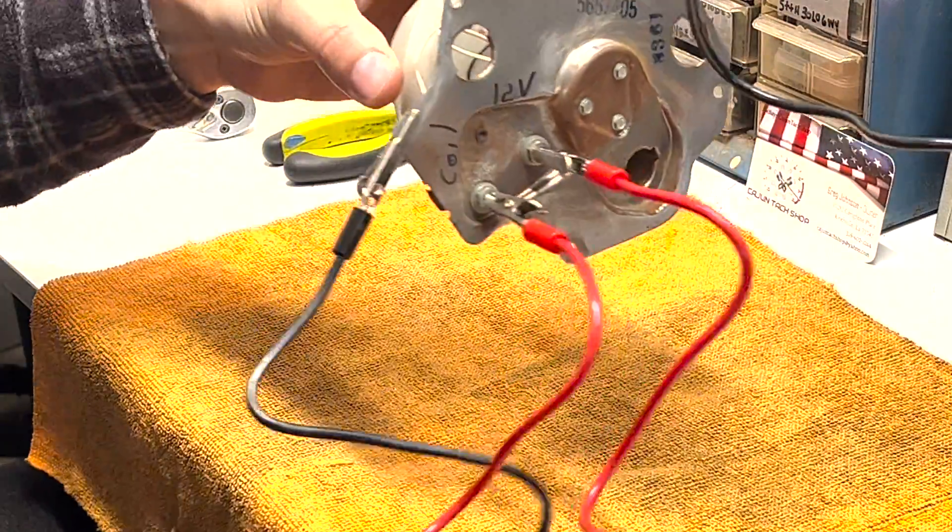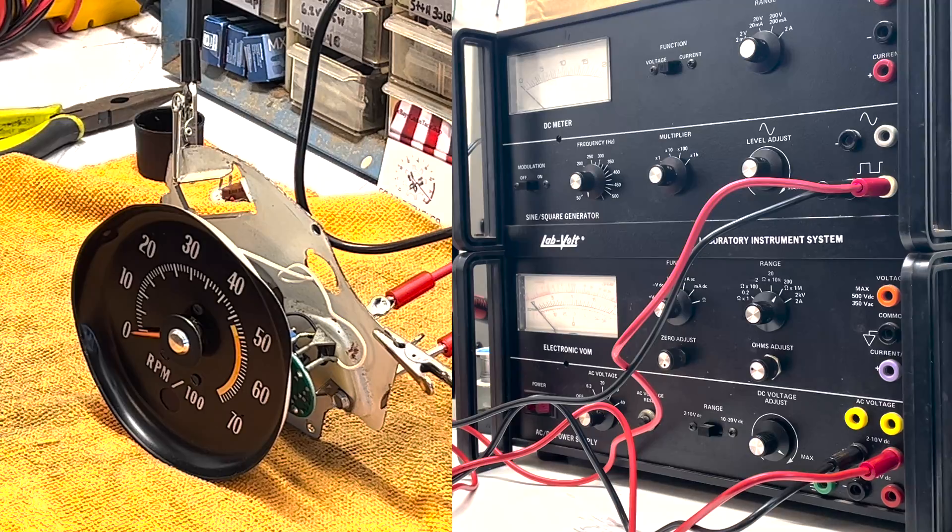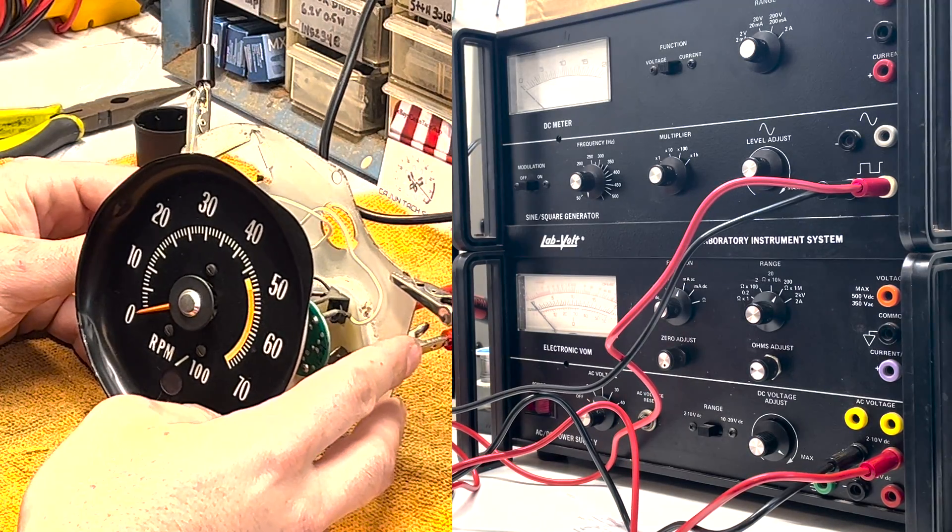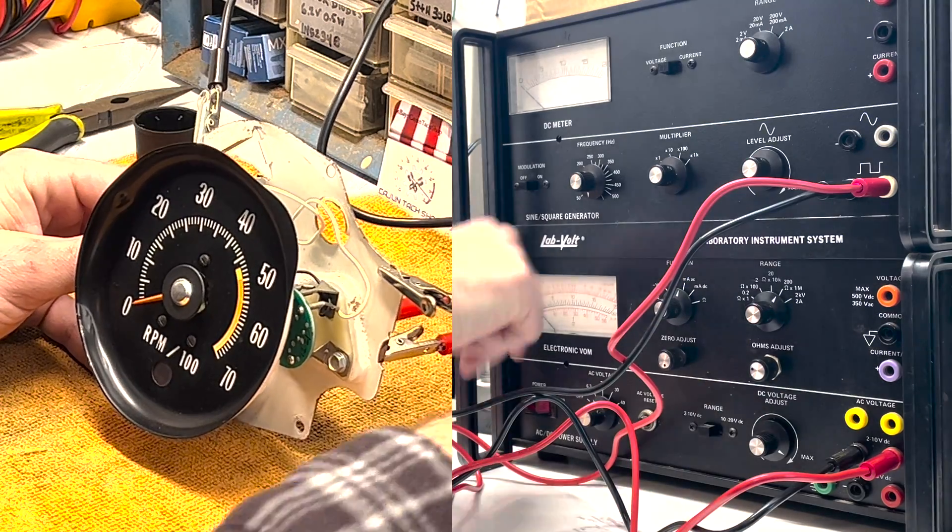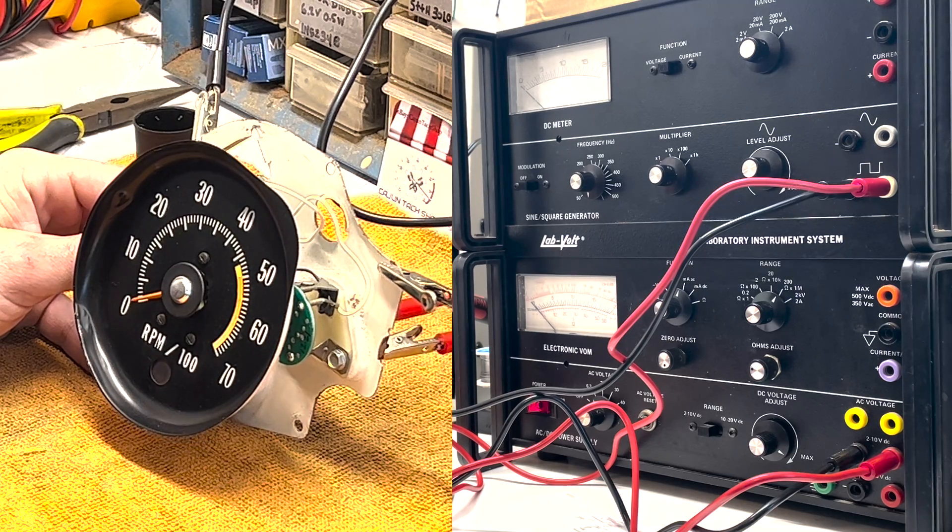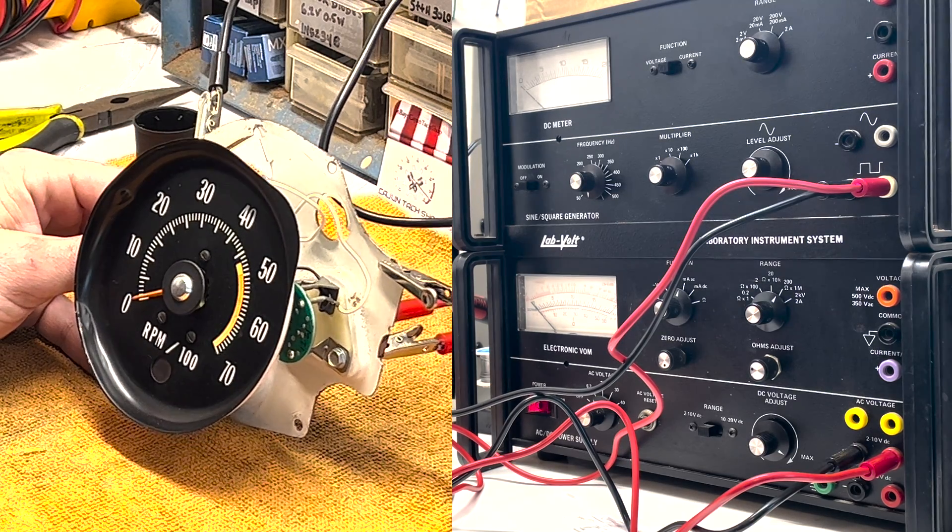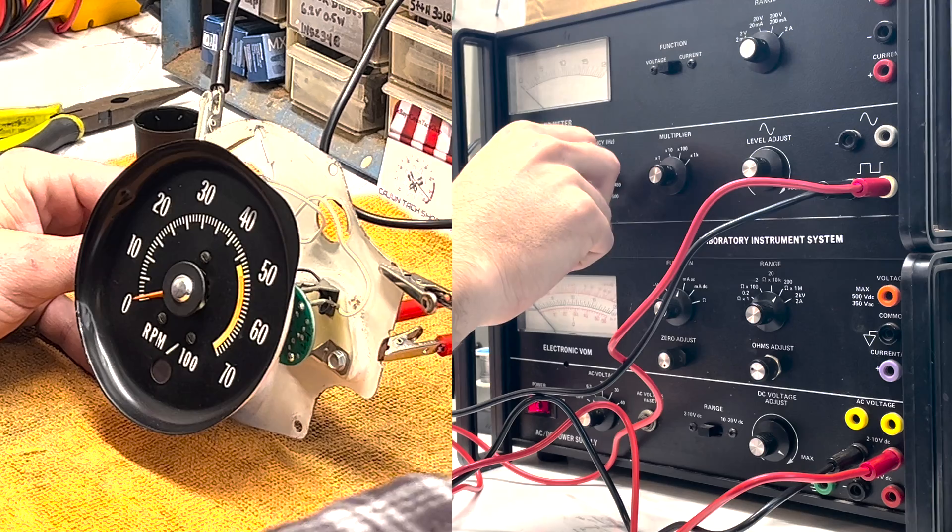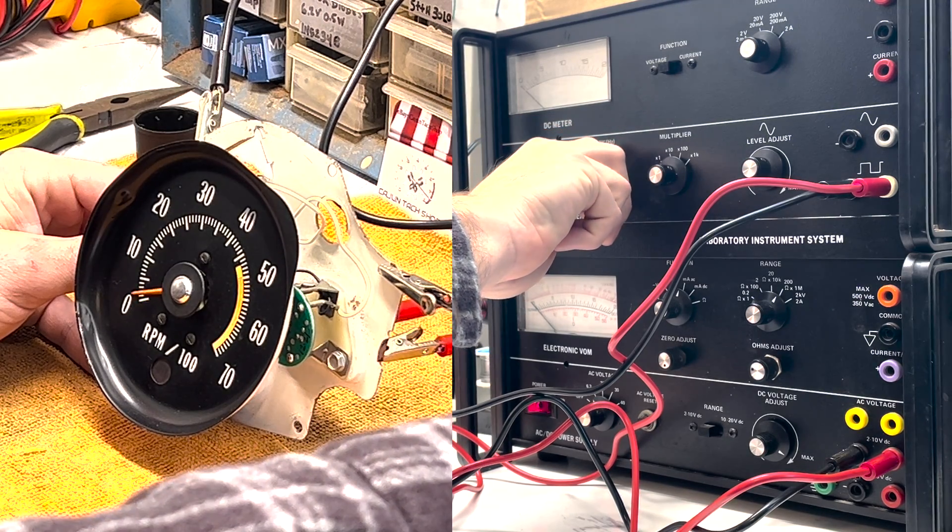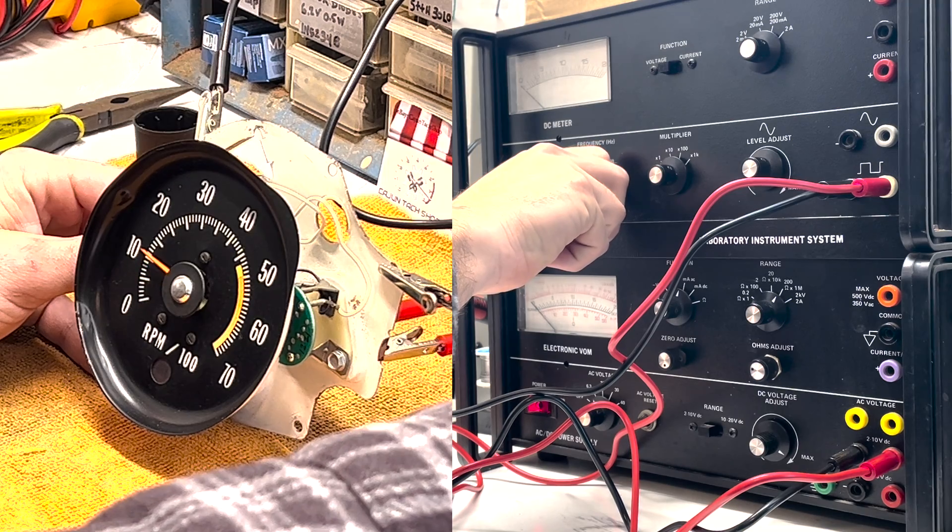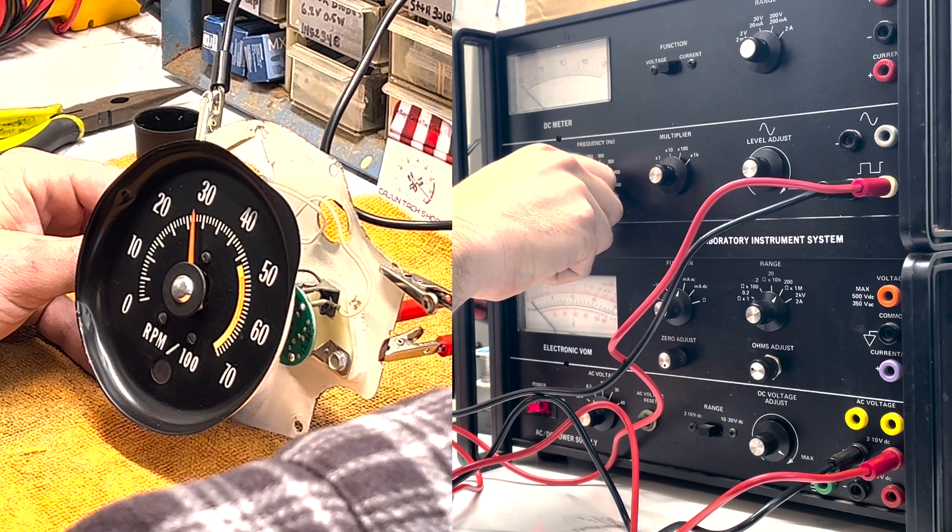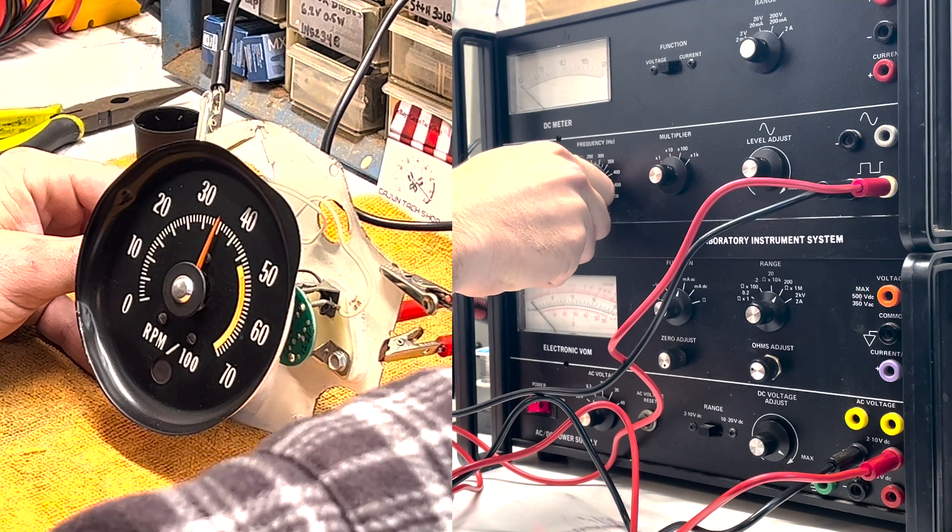All right, okay, so we are all set up here with the function generator and power supply. I'm just going to switch the power on here, no sparks, no smoke, that's good. And I will start by changing the frequency of the square wave. So the higher I go, there we go, you can see the RPM gauge start to move. There we go, nice and smooth. We'll take it all the way to redline.